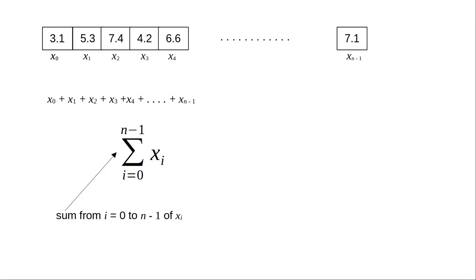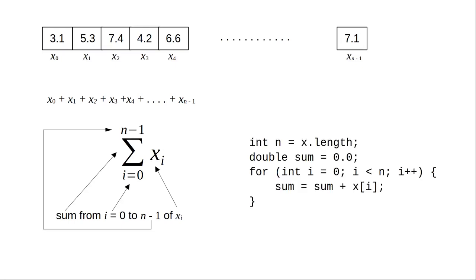Sum from i equals 0 to n-1 of x sub i. This translates nicely to a Java for loop.